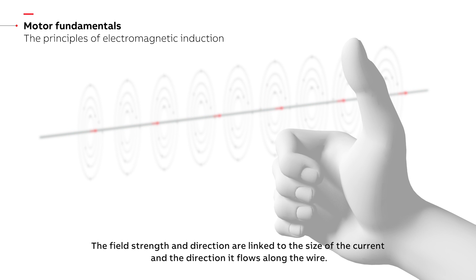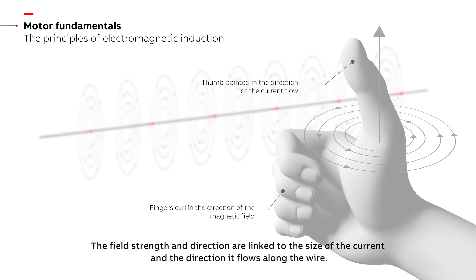The field strength and direction are linked to the size of the current and the direction it flows along the wire.